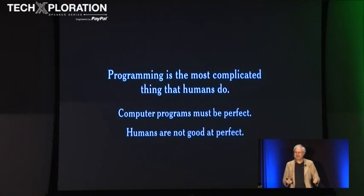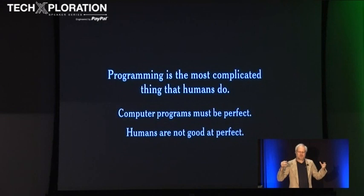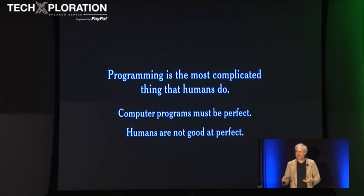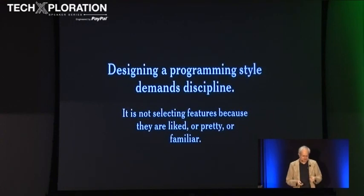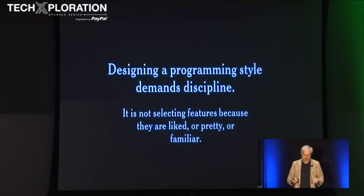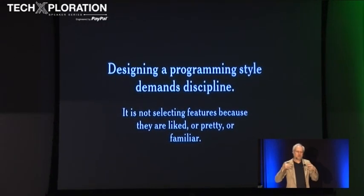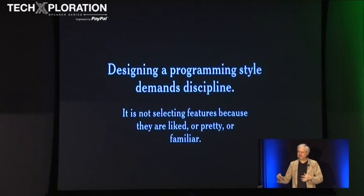Programming is the most complicated thing that humans do. Computer programs must be perfect, and we are far from perfect. I consider myself a deeply flawed human being, and so I need this discipline to write things this complicated that need to approach perfection beyond what I'm naturally capable of. Designing a programming style demands discipline — not selecting features because they're liked or pretty or familiar, but because they help reduce your error rate. And I don't think there's anything else we can do that makes us more effective as programmers.